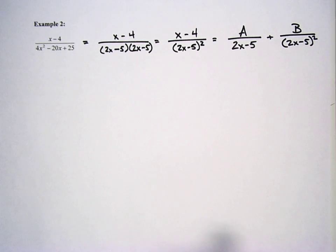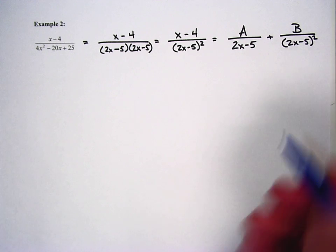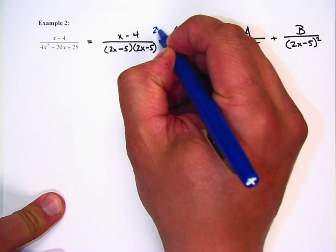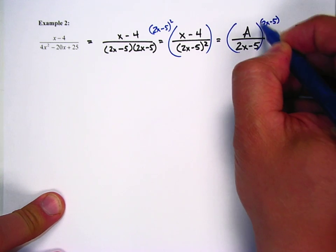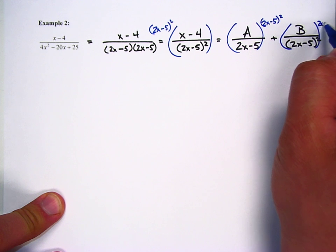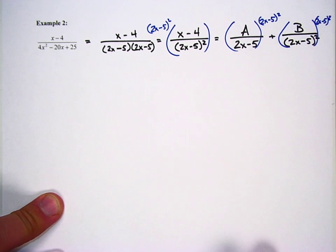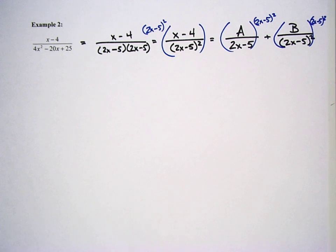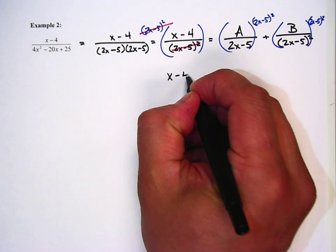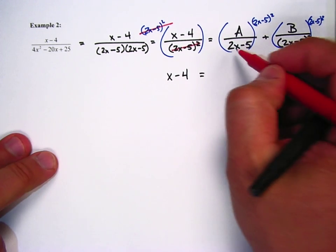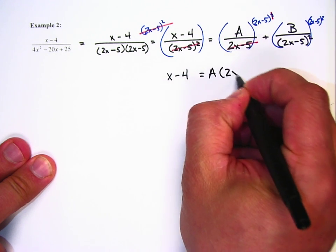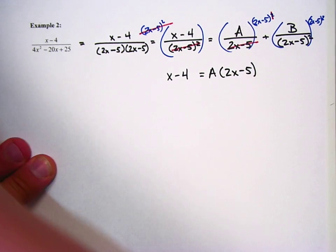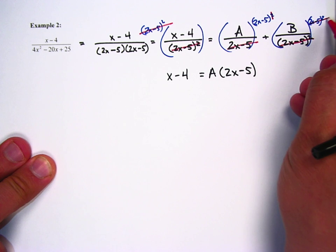This should be pretty easy now that we have it factored. I'm going to multiply both sides by the common denominator, 2x minus 5 squared. The left side denominators cancel, leaving us with x minus 4 on the left. One of the 2x minus 5 factors cancels on the first term, giving us A times 2x minus 5. Then the 2x minus 5 squared cancels completely on the second term, leaving just B.